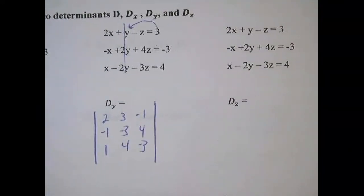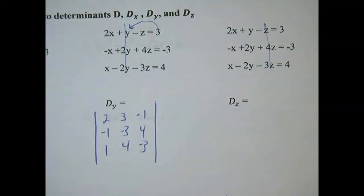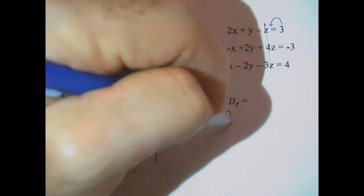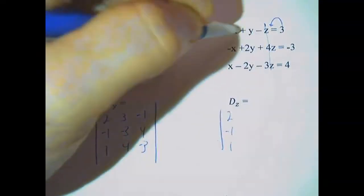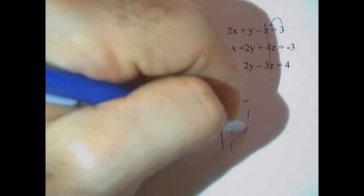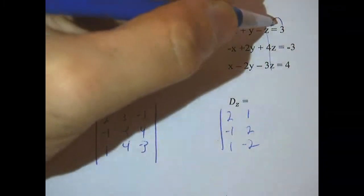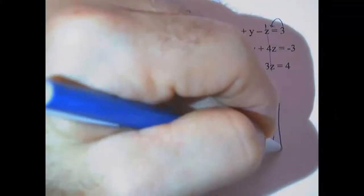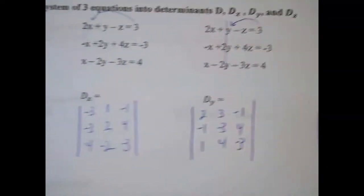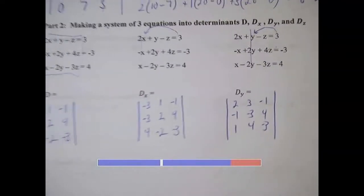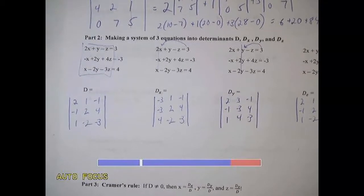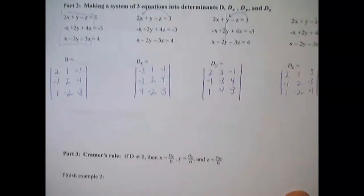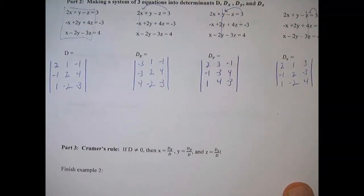And then the z's will be replacing our z column with the answer column. So we're going to get 2, negative 1, 1, 1, 2, negative 2, and then 3, negative 3, 4. Now all we have to do, and that is kind of a lot of work, I'm not going to lie, all we have to do now is evaluate each one of these 3 by 3 determinants and we're on our way.